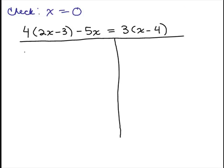So I'm going to plug in zero for x and I'm going to do the left-hand side. So in this parenthesis, I'm going to end up with zero minus 3 which is just negative 3, and minus 5 times zero is just zero. So this just becomes negative 12 minus zero or negative 12.